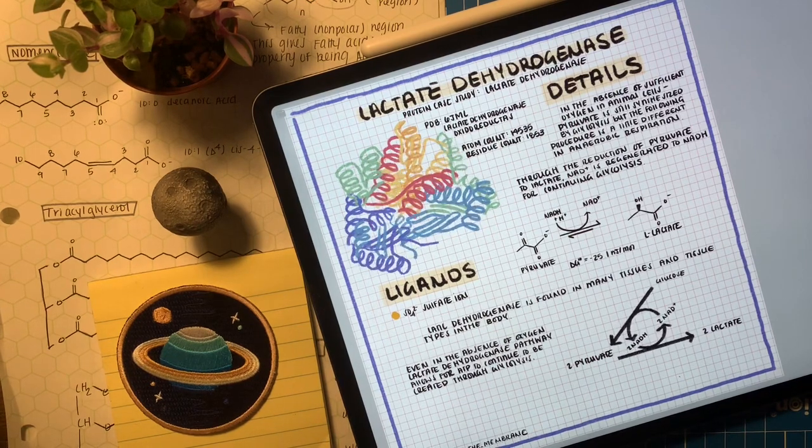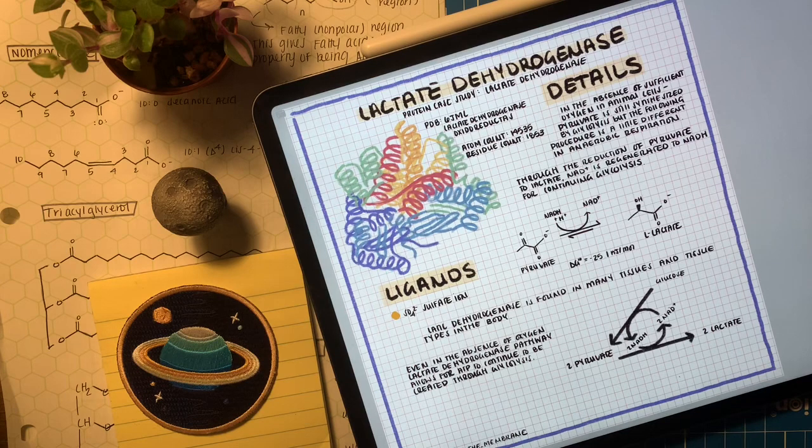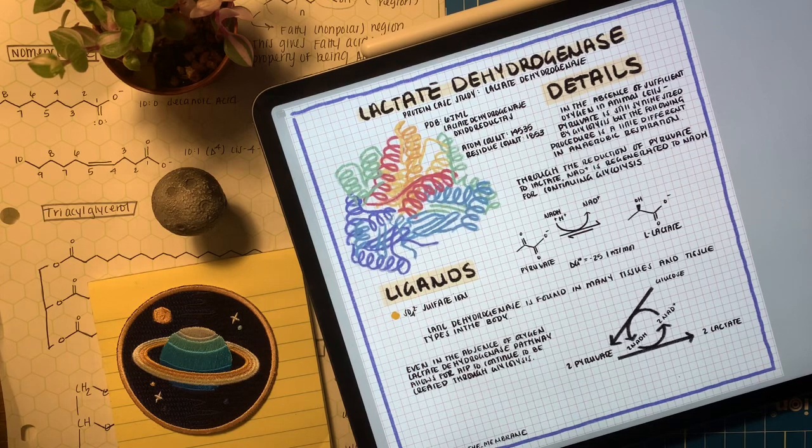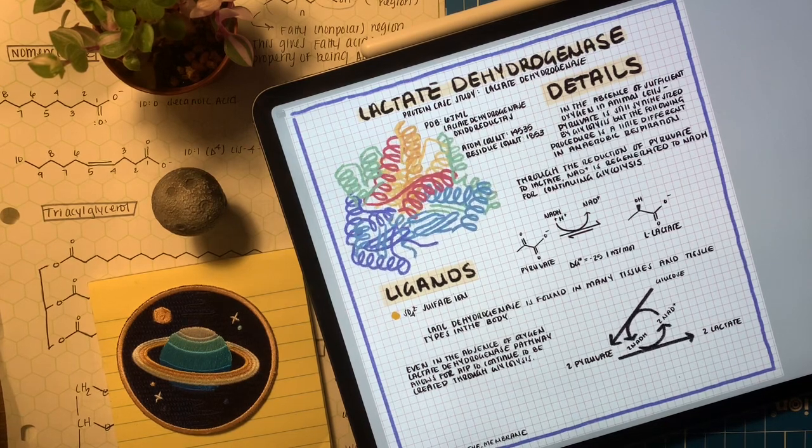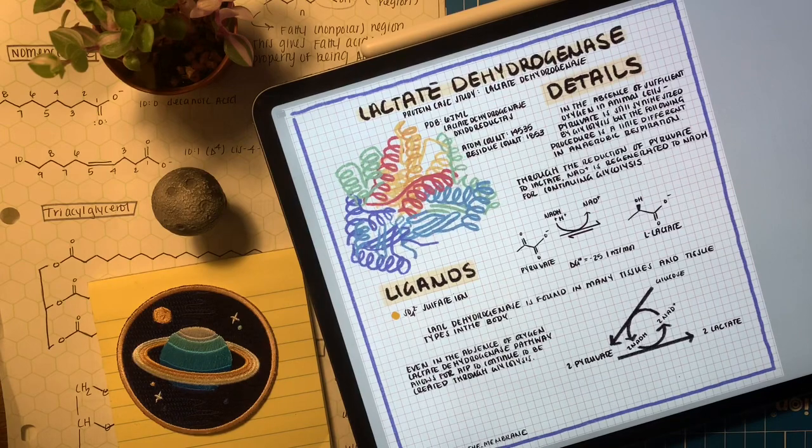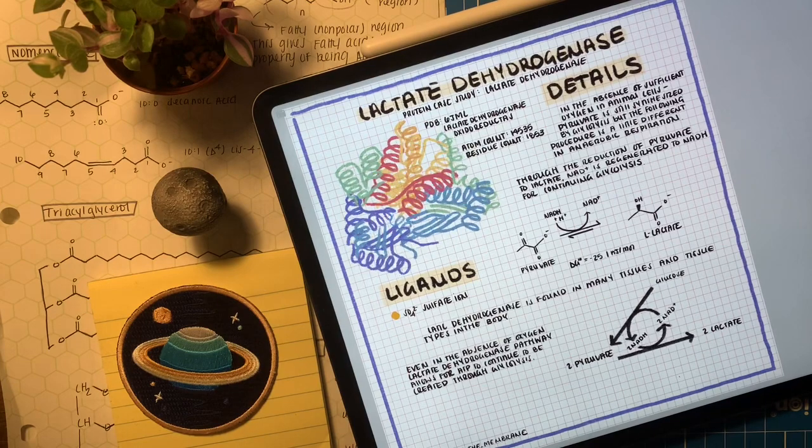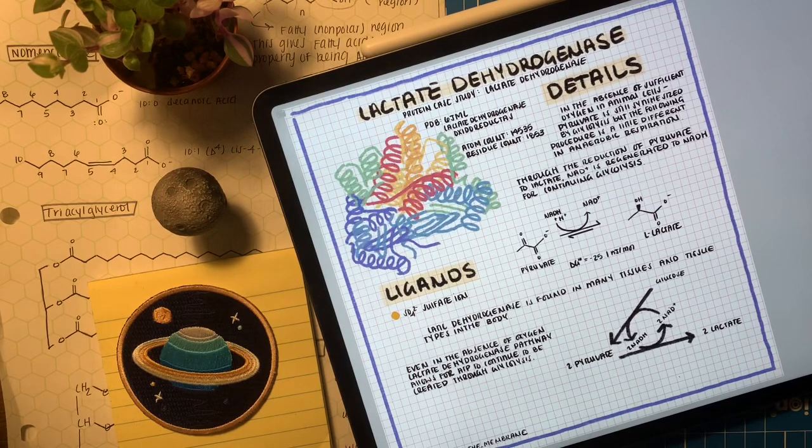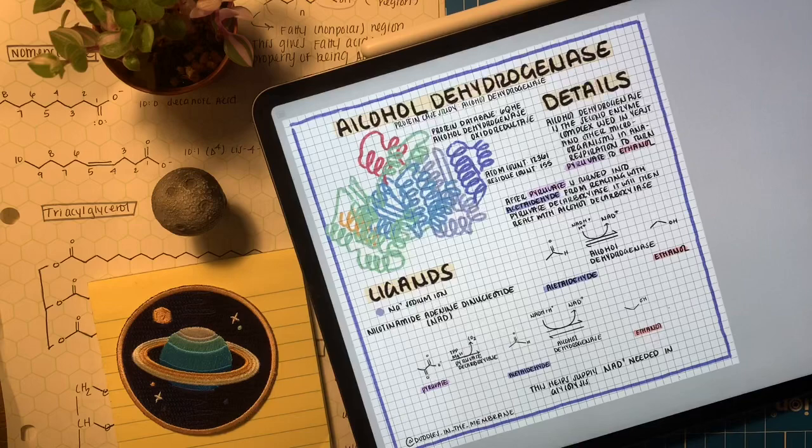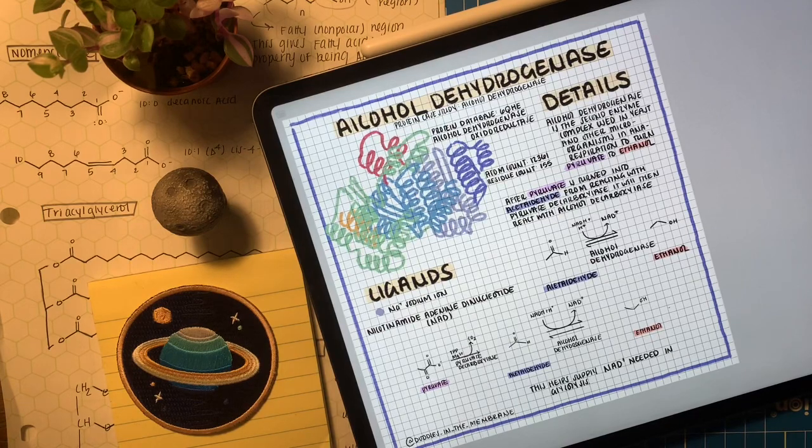Why these reactions are so crucial is because they help provide NAD+ for glycolysis. Glycolysis is still happening even in anaerobic conditions and still producing ATP, but we need NAD+ to fuel it. Since we're not going to the TCA cycle or oxidative phosphorylation, anaerobic respiration helps provide NAD+ for glycolysis to continue.